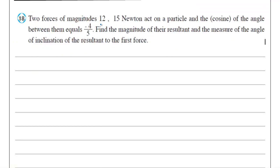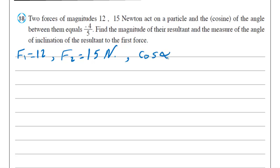Next question. Two forces of magnitudes 12 and 15 newtons act on a particle, and the cosine of the angle between them equals negative 4 over 5. So F1 equals 12 and F2 equals 15 newtons, and cosine α equals negative 4 over 5, where alpha is the angle between them. Find the magnitude of their resultant and the measure of the angle of inclination of the resultant to the first force, which is 12 newtons.